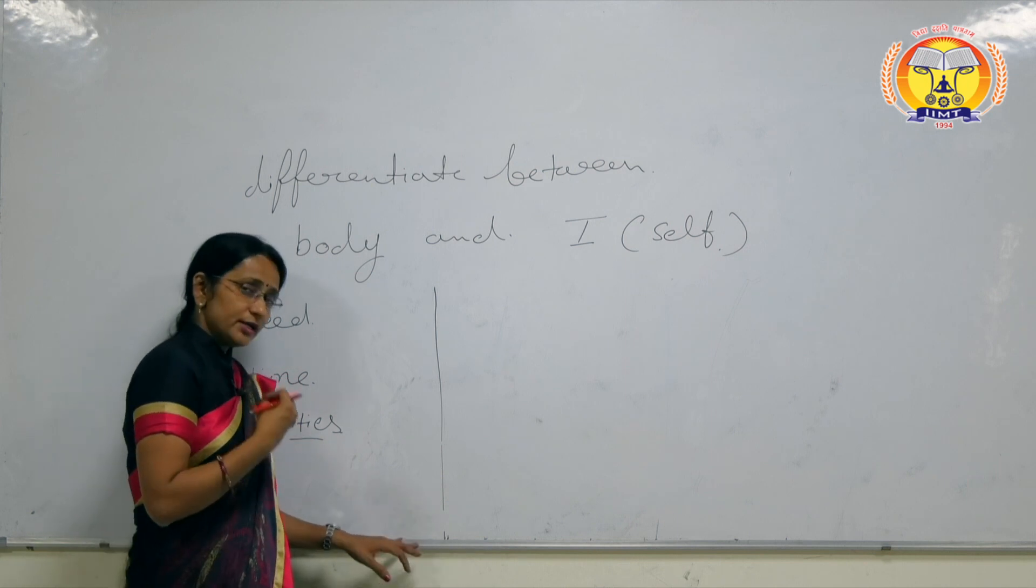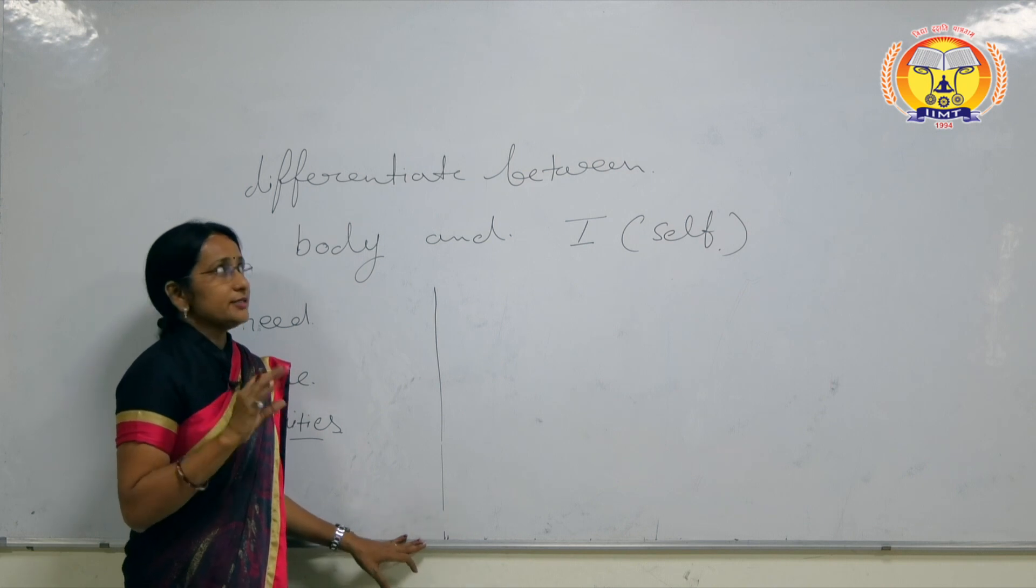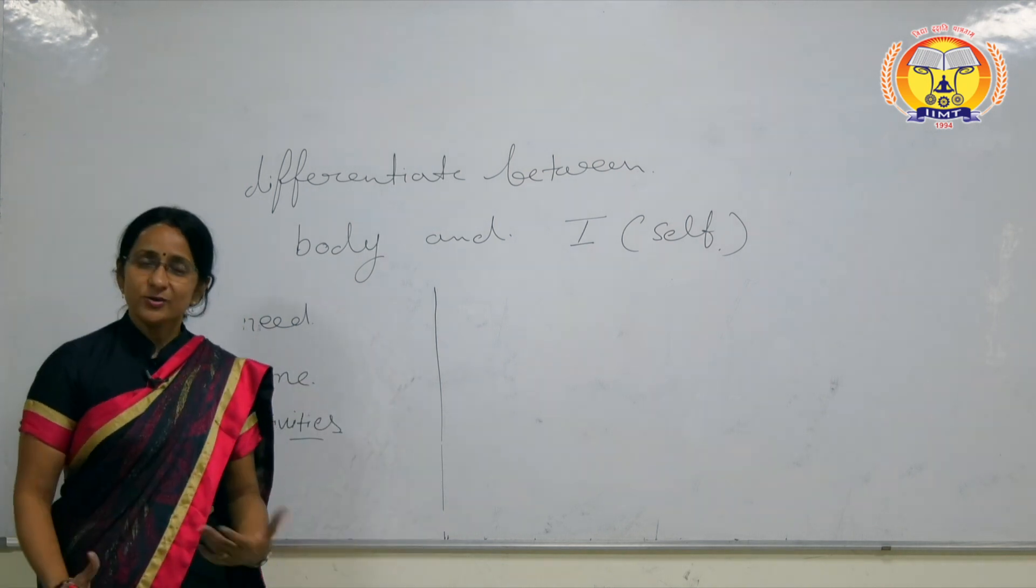Conscious entity means you have satisfaction, that is the type for self. So we can differentiate body and self. Thank you so much.